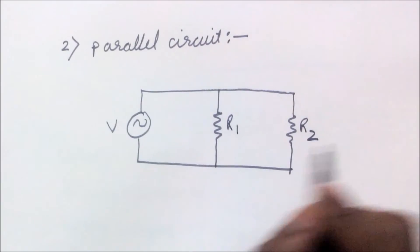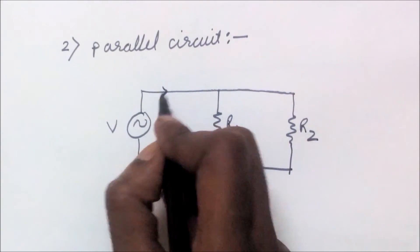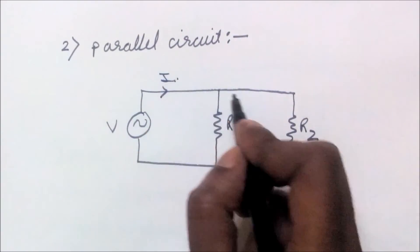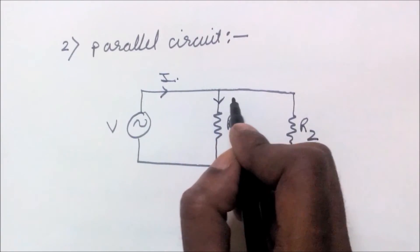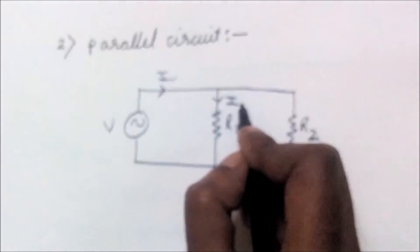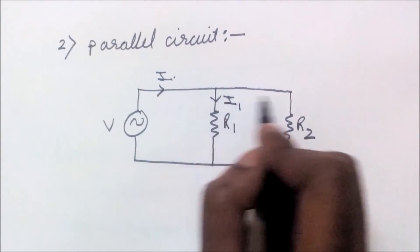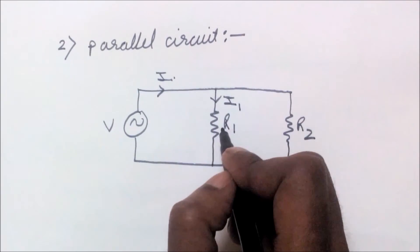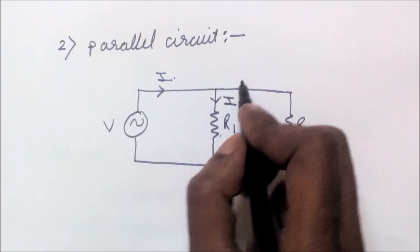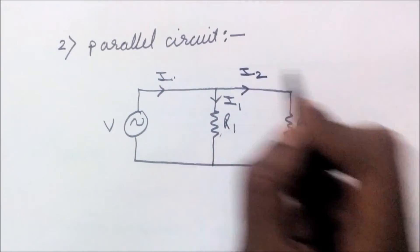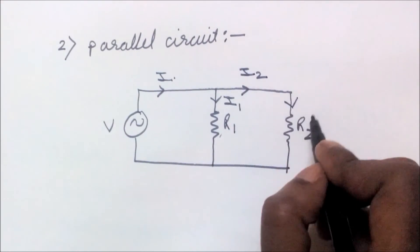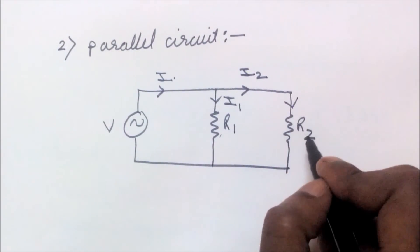In parallel circuit, current is different but voltage is the same. Suppose this is I1, the current flowing through R1 resistance, and this is I2, the current flowing through R2 resistance.